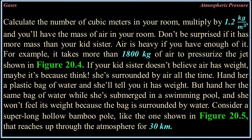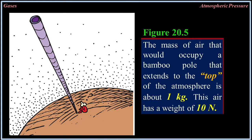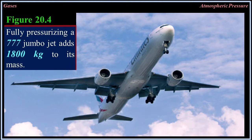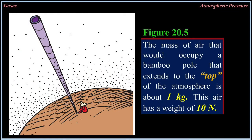But hand her the same bag of water while she's submerged in a swimming pool and she won't feel its weight, because the bag is surrounded by water. Consider a super long hollow bamboo pole like the one shown in figure 20.5 that reaches up through the atmosphere for 30 kilometers. The mass of air that would occupy a bamboo pole extending to the top of the atmosphere is about 1 kilogram.